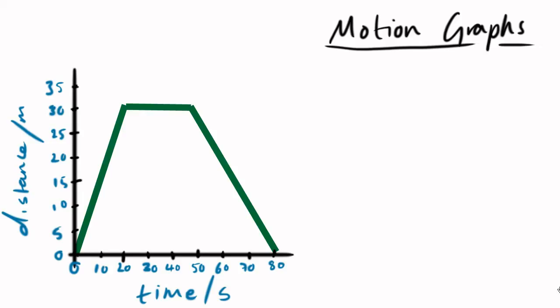But you can also get more information from that, you can actually use this graph to calculate the speed during this constant velocity section. So remember that speed is distance divided by time. Well in this first section, the distance travelled is 30 metres. The time that travelling took is 20 seconds. So, 30 divided by 20 is 1.5 metres per second. Very simple.